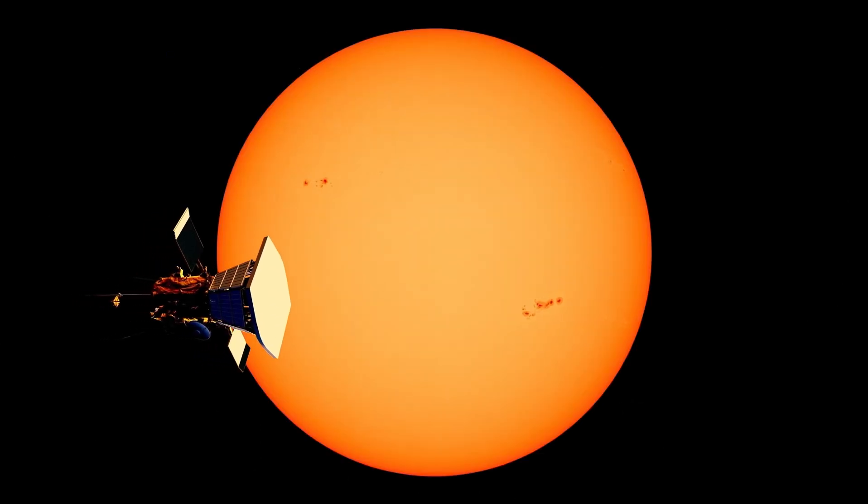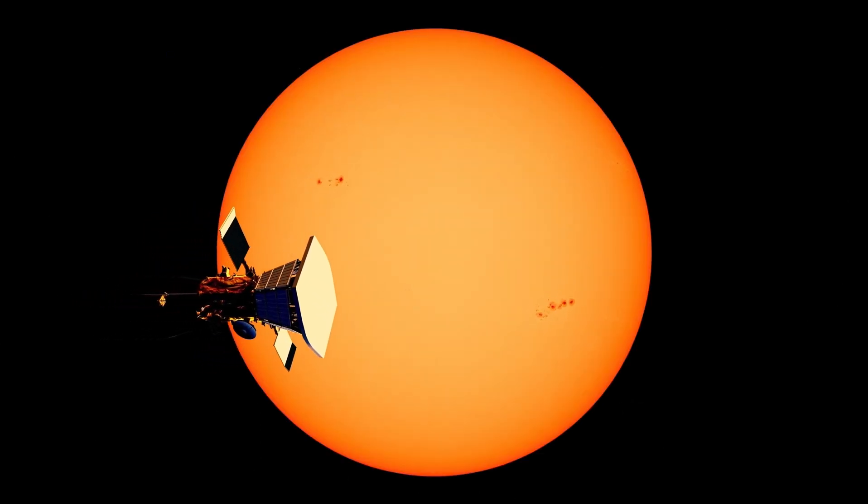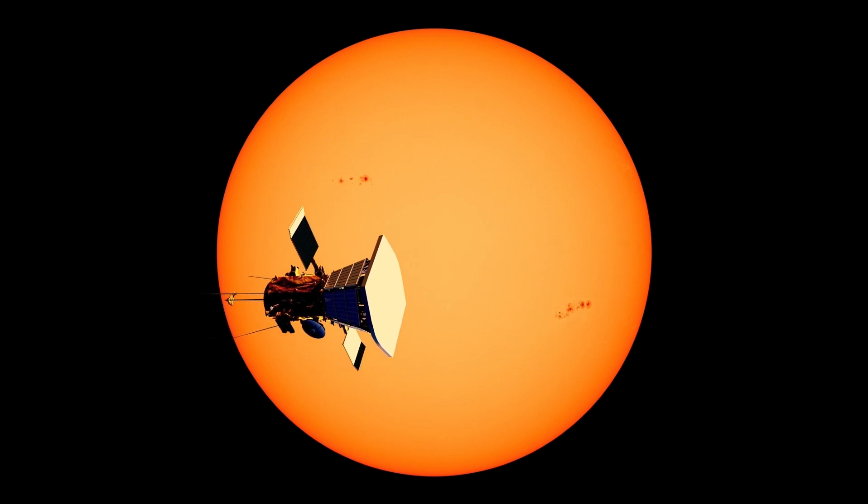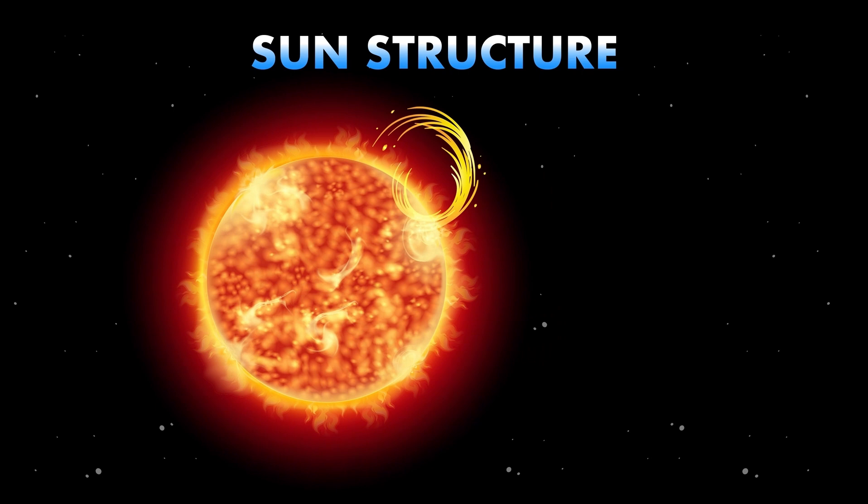Antares is massive, about 12 times more massive than the Sun, and has a radius that's about 700 times larger than the Sun. So it's pretty safe to say that Antares is no shrinking violet.